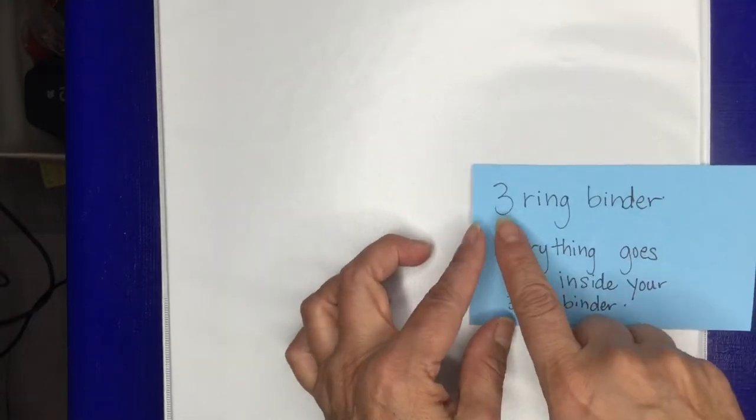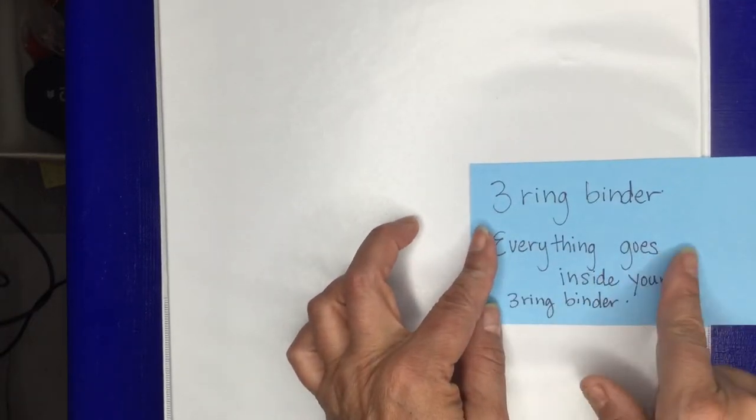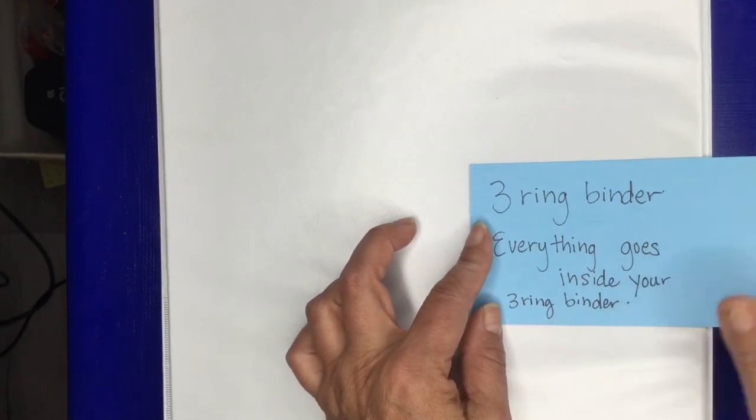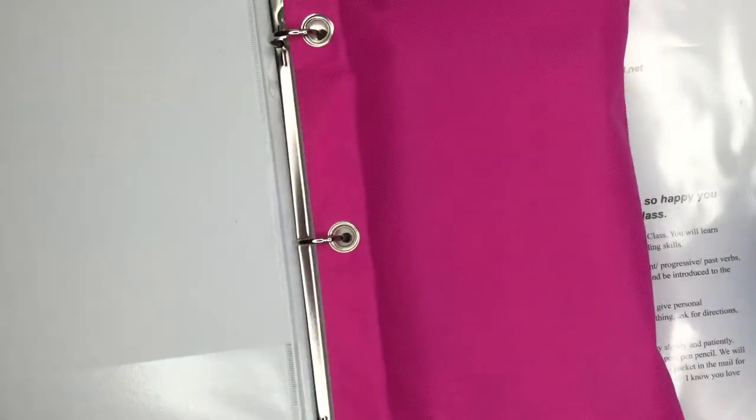So we need to buy a three-ring binder. Everything goes inside of the three-ring binder. So here's your one, two, three ring binder.